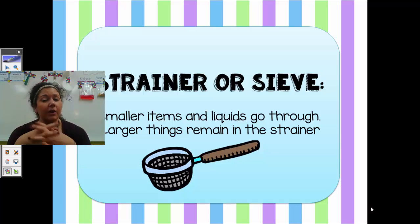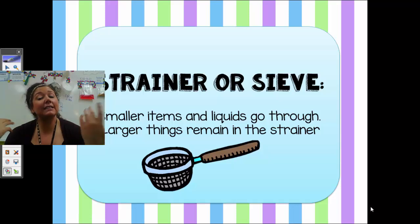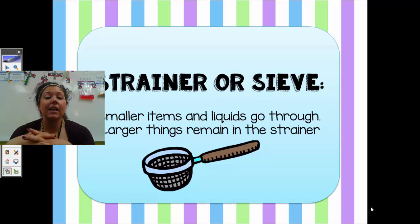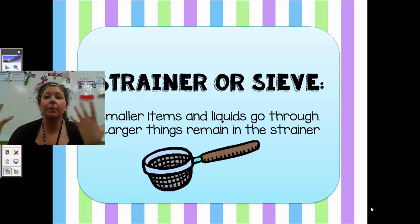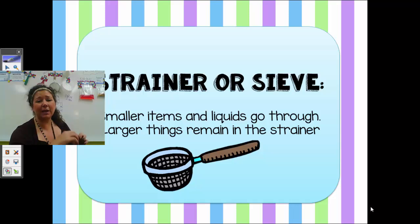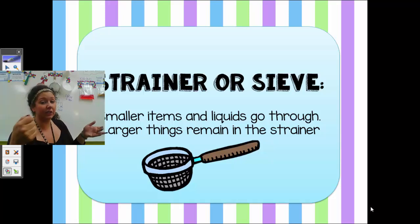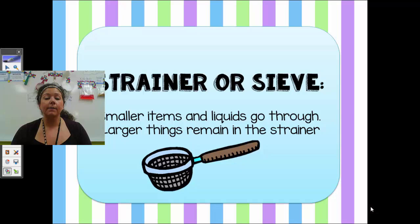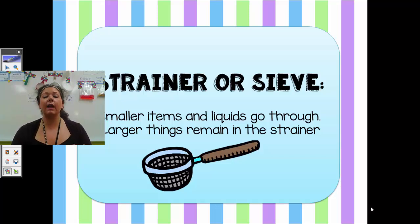The first one we're going to talk about is a strainer. You may also hear a strainer called a sieve — we call it a sieve mostly in science, and at home you hear it called a strainer. This is something your parents probably have right in your kitchen. The purpose of a strainer is to allow smaller items and liquids to go through, and the larger things will remain in the strainer. There are little holes in it, and depending on the size of those holes, some things will pass through and others will stay inside.